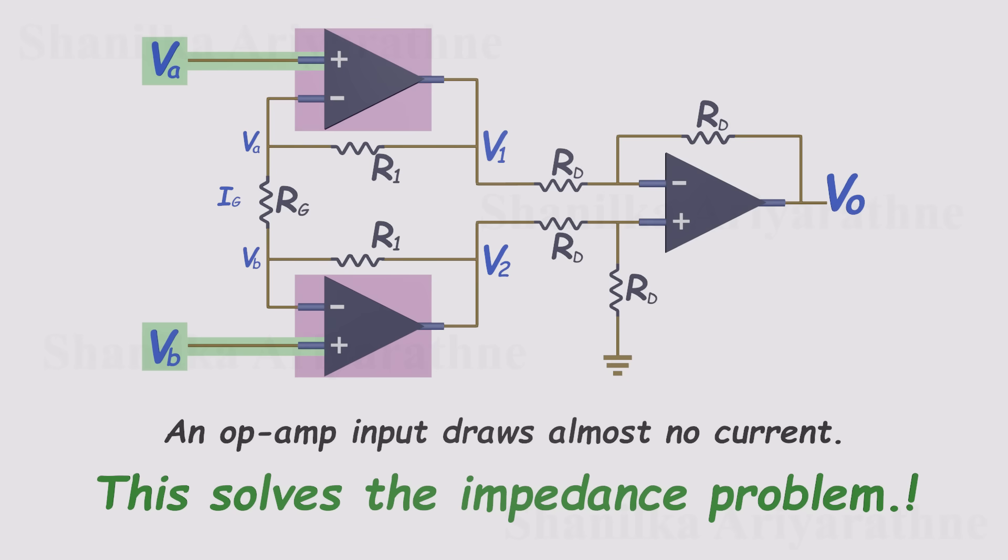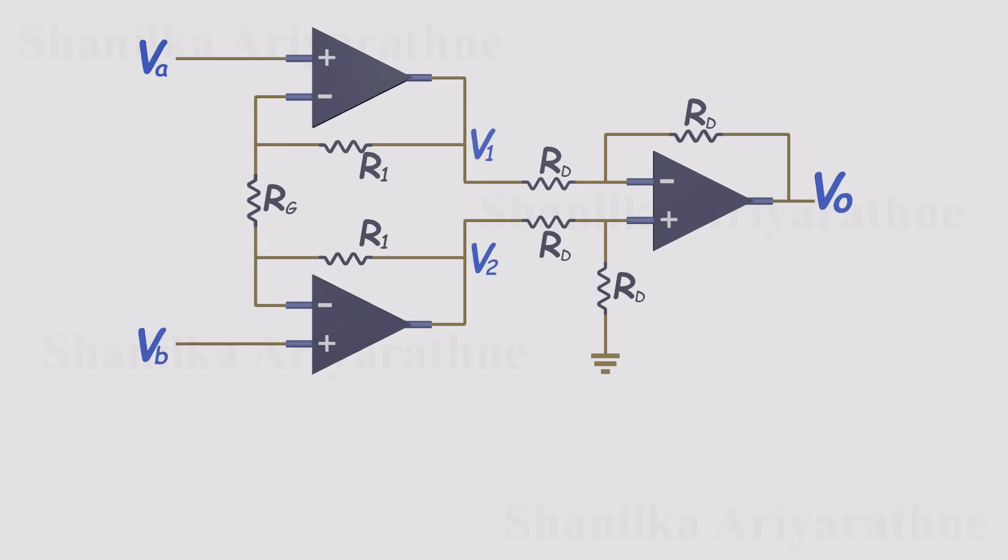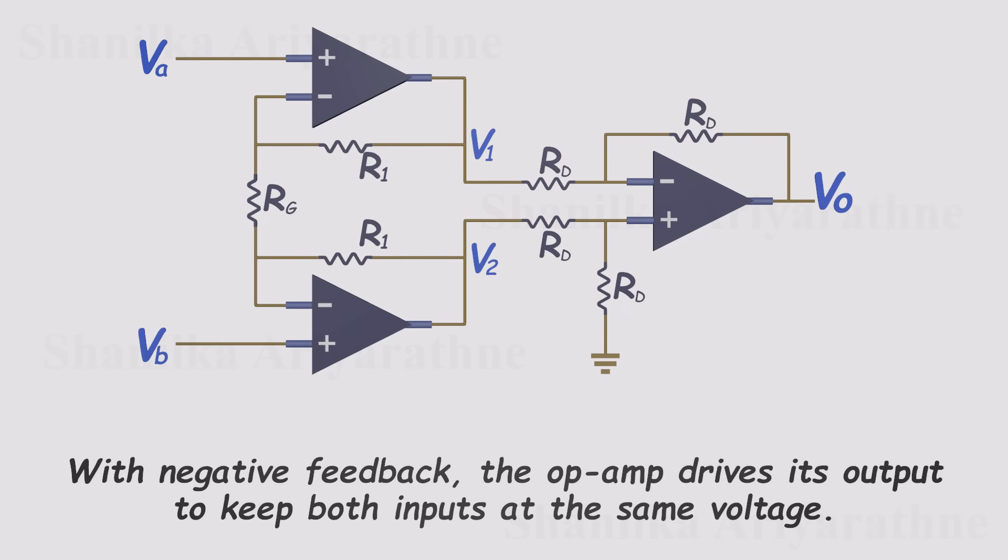Now, there's still one last issue to solve. How to make the gain easy to adjust? The instrumentation amplifier handles this beautifully with just a single resistor. Suppose the outputs of the two input buffers are V1 and V2. Remember the golden rules of op amps. With negative feedback, the op amp adjusts its output so that both inputs sit at the same voltage.